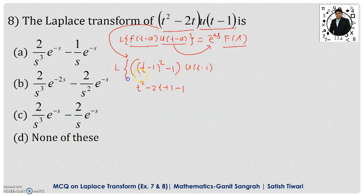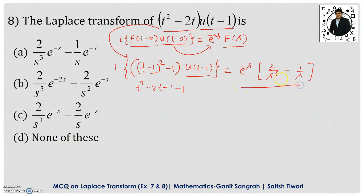Now we take the Laplace transform. For u(t − 1), we write e^(−s). Excluding the −1 from (t − 1)², we get t², whose Laplace transform is 2/s³. Then minus the Laplace transform of 1, which is 1/s. So the result is e^(−s) · (2/s³ − 1/s). Comparing with the options, option A is the correct answer.